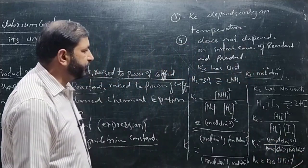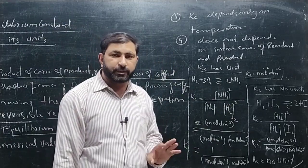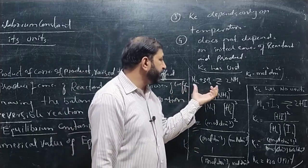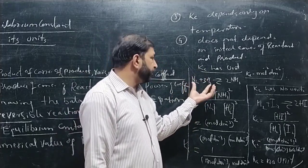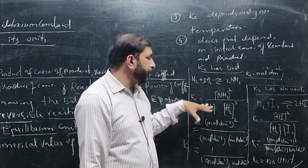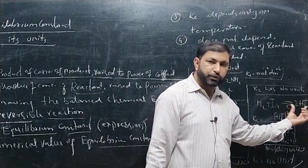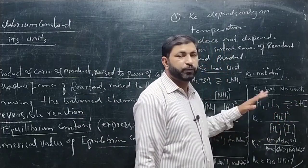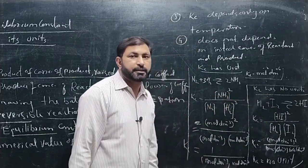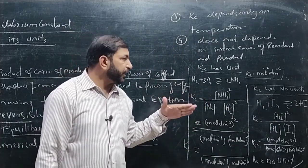So Kc has no unit for the H₂ + I₂ ⇌ 2HI reaction. This shows us the difference: when the number of moles of reactants and products are unequal, Kc has units. When the number of moles of reactants and products are equal, Kc has no units.